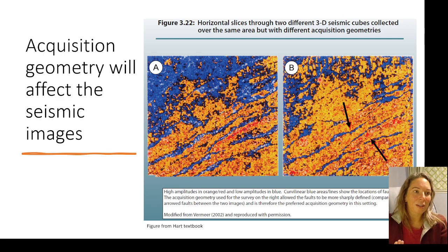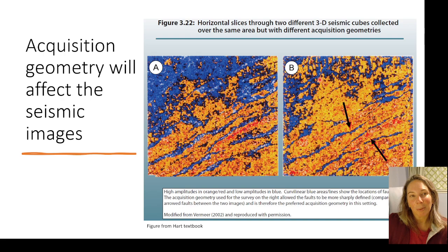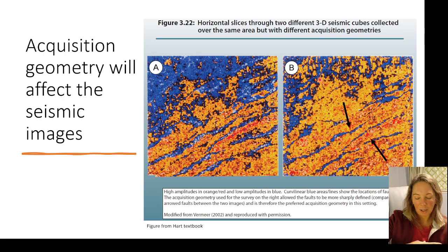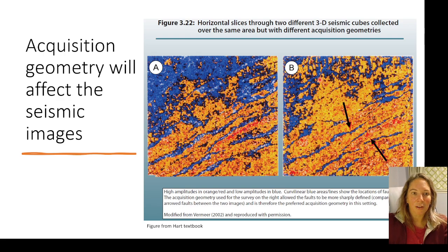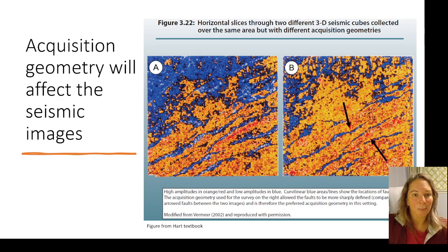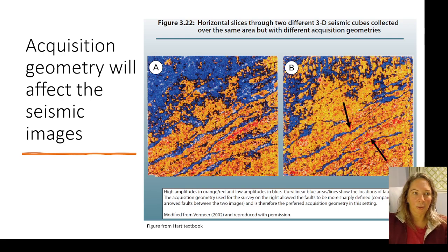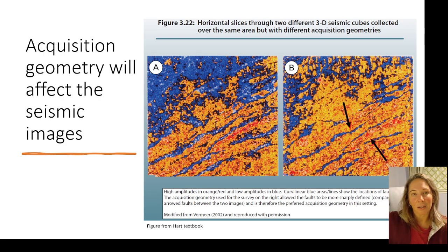Geometry really matters. Depending on whether you shoot your seismic survey parallel or perpendicular to known faults, that can totally change the appearance of those faults in the seismic data. This example from the Hart textbook shows two different survey geometries, illustrating how you end up illuminating features differently in the subsurface. In this case, I would be much more confident picking the faults on the left-hand side than on the right-hand side.